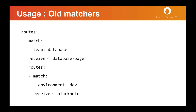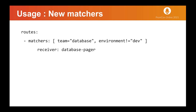In this slide, you can see the usage of old matchers. For example, if we want negative matching for a black hole receiver, we would need a config file similar to the one shown here. If an alert is labeled team equals database, we need to send it to the database pager, but if it is also labeled environment equals dev, we should not send it. The config file is greatly simplified with the help of new matchers, as you can see in this slide. For more information, please refer to the Alert Manager documentation. Thank you.